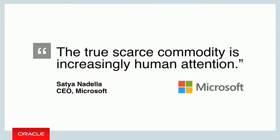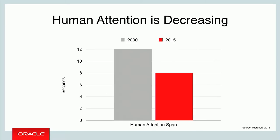Attention is an interesting concept. Microsoft recently did a study, and the CEO said that the true scarce commodity is increasingly human attention. It's just getting harder and harder to keep people's attention. Their study actually showed that the human attention span has decreased by about 40% over the last 15 years, which is significant.